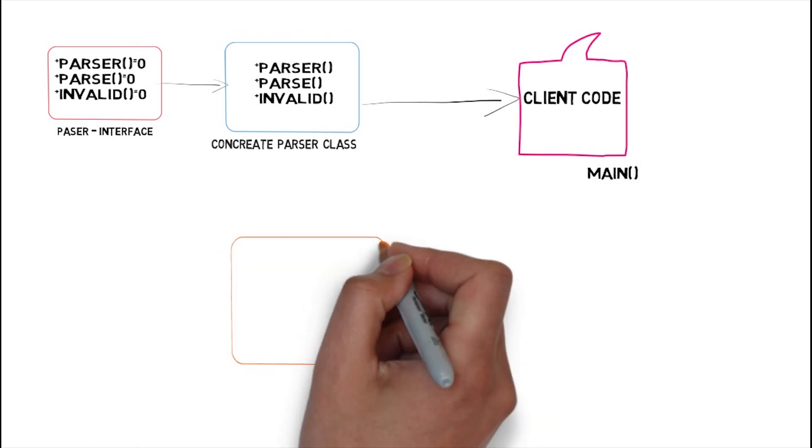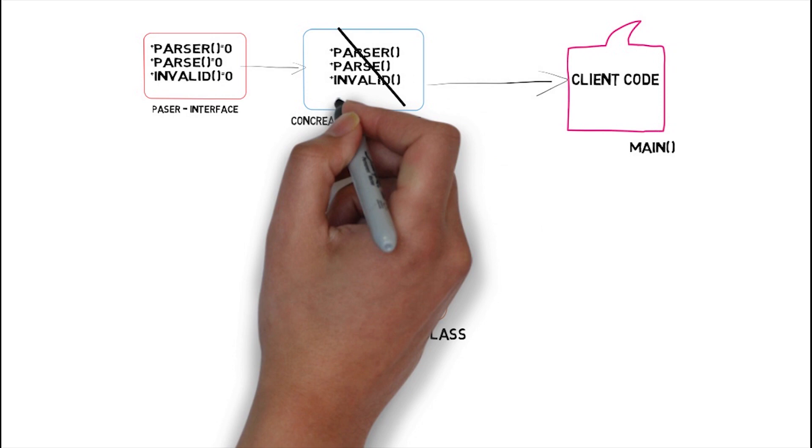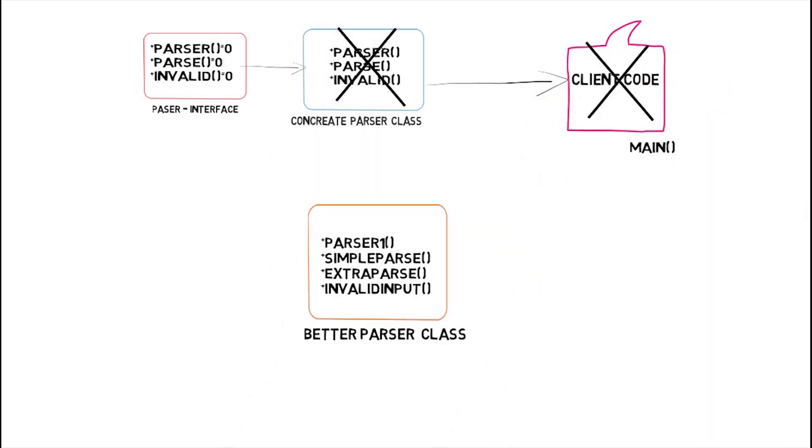But in the future, if this simple parsing class is going to be replaced with a better parsing class, your client code will be impacted and whatever coding was done on the client side will break. The new better parser class is not compatible with my client code. So what I need to do is use an adapter class — it will take input from the parsing class and feed it to my main function or client code. This is what the adapter design pattern solves.